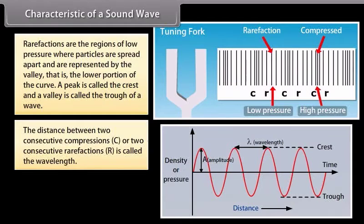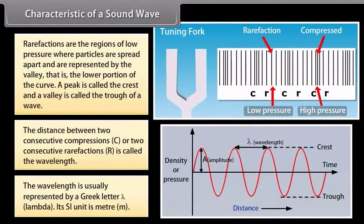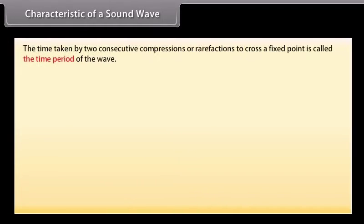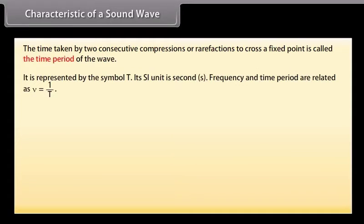The distance between two consecutive compressions or two consecutive rarefactions is called the wavelength. The wavelength is usually represented by a Greek letter lambda. Its SI unit is meter. The time taken by two consecutive compressions or rarefactions to cross a fixed point is called the time period of the wave. It is represented by the symbol T. Its SI unit is second. Frequency and time period are related as nu is equal to one upon T.